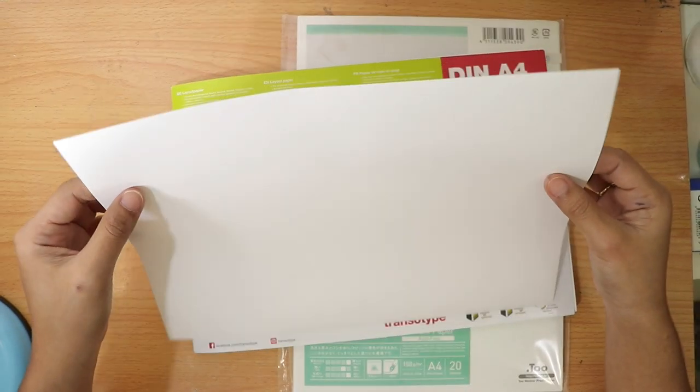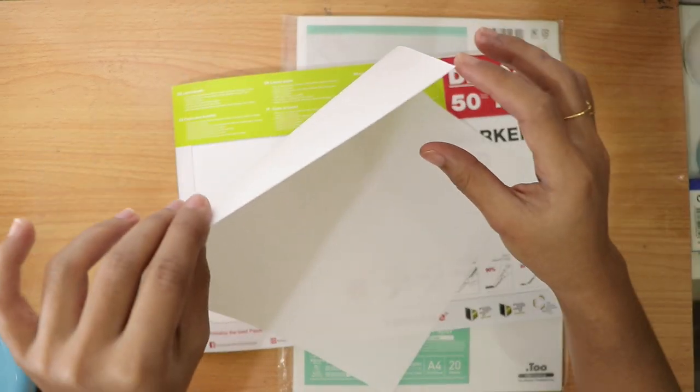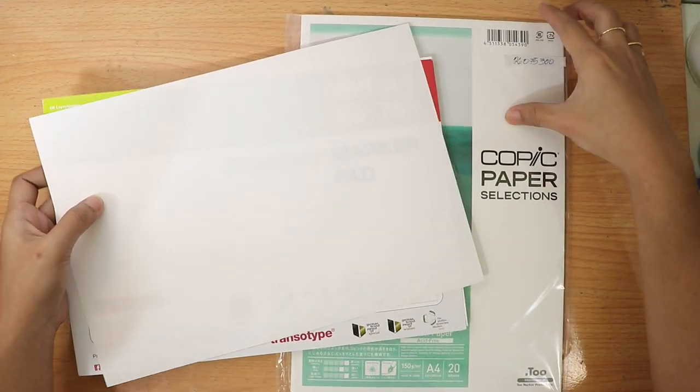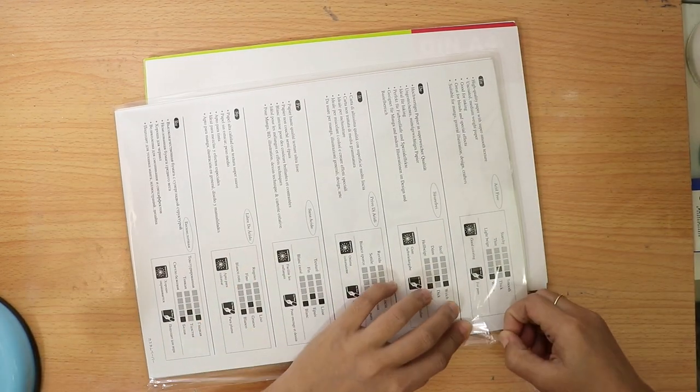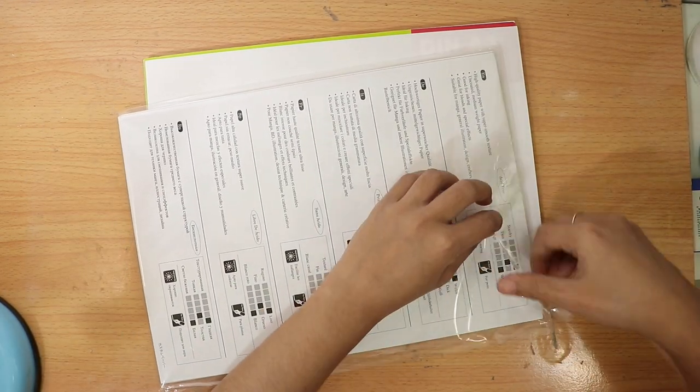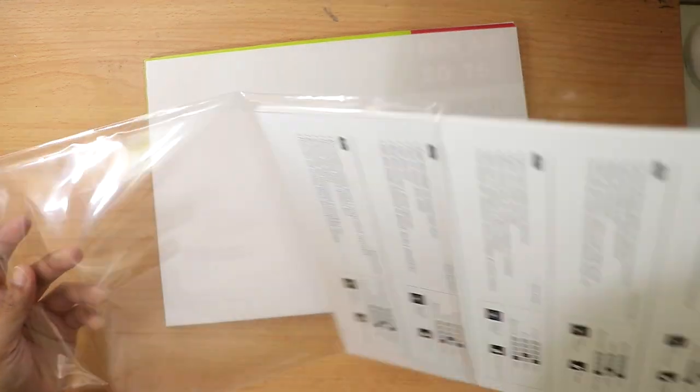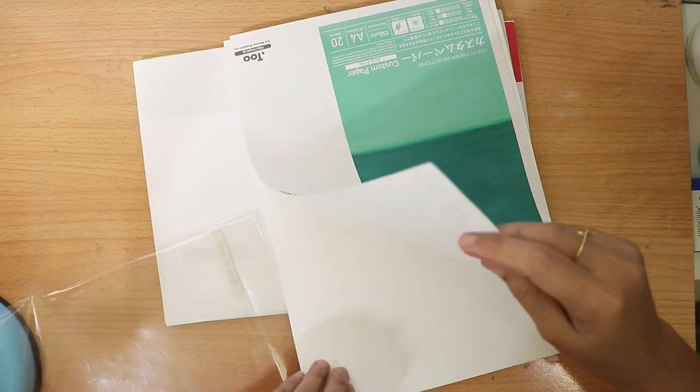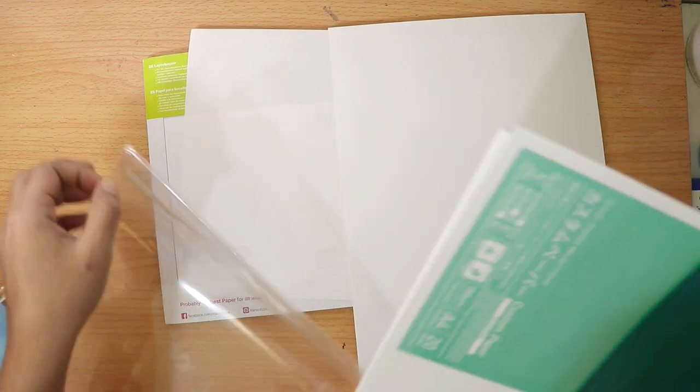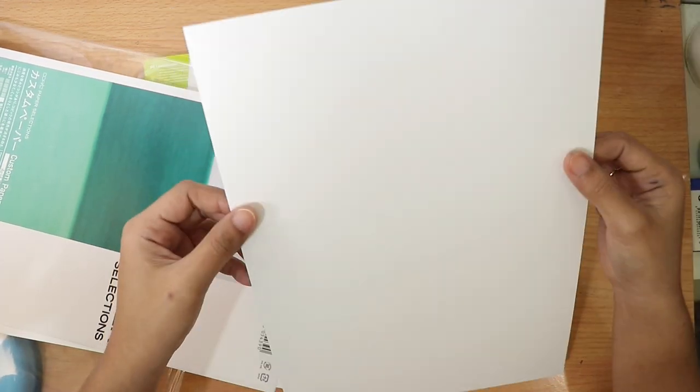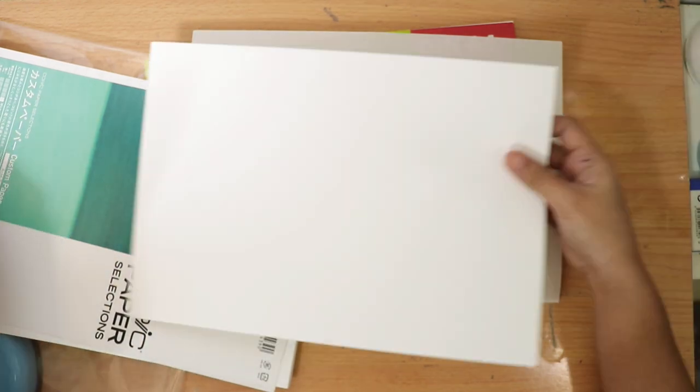As you can see this paper is so thin, thinner than I expected and when I place it here you can see the details underneath the paper and I think it's more likely a trace paper. While this copic paper is not thin but not so thick and I like it, it's pretty nice.